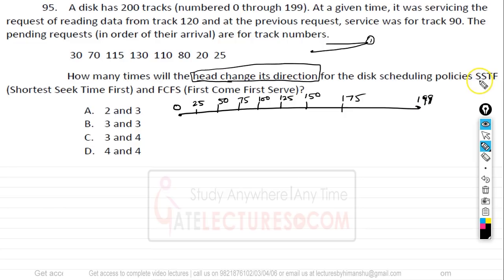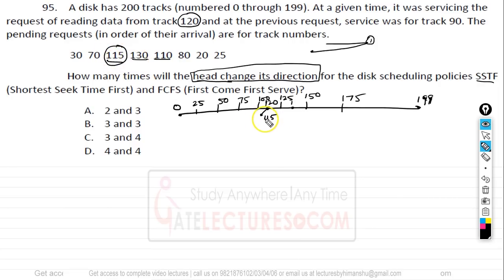Using SSTF: currently the head is at track 120. The nearest pending requests are 115, 110, and 130. The nearest is 115, with a seek time of 5. Since the previous request was 90 and then 120, the head was moving in the right direction. So moving to 115 means the head changes direction — this is the first direction change.